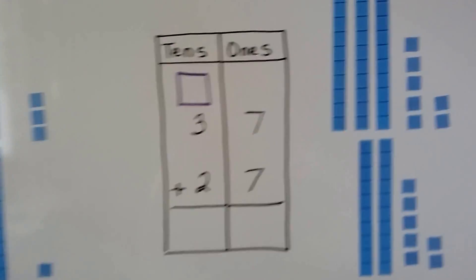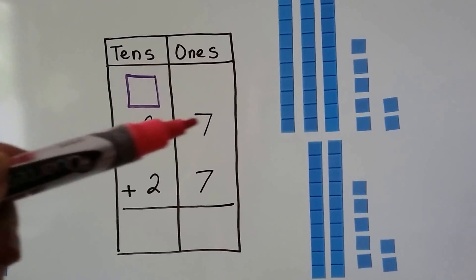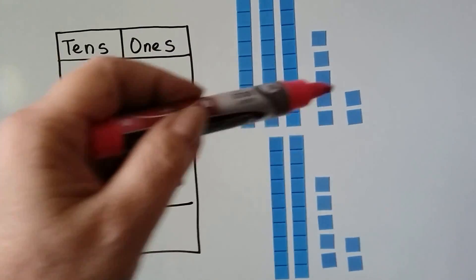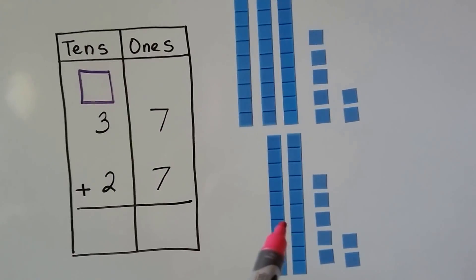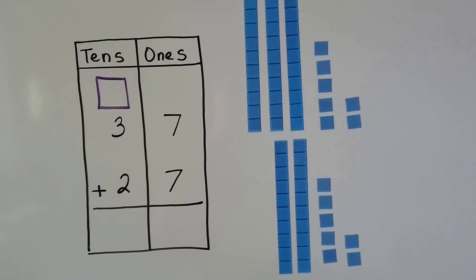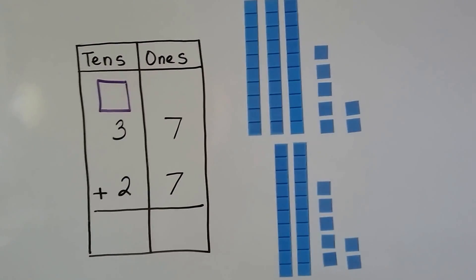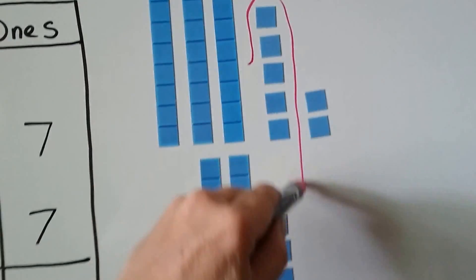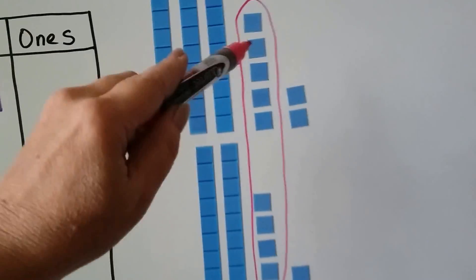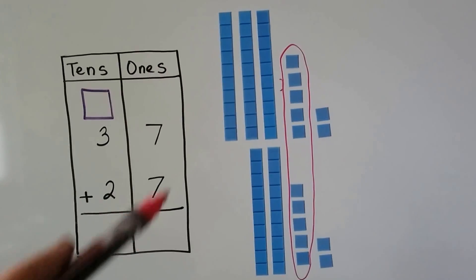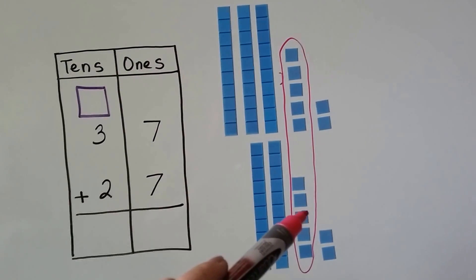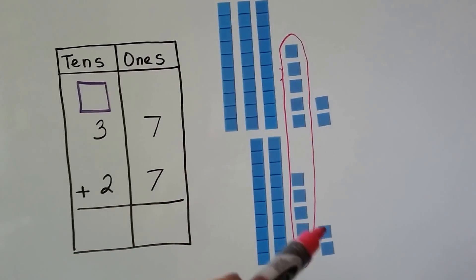Let's try it again. Here we have 37 plus 27. We have three tens and seven ones, and two tens and seven ones. Do we have enough ones to make a new ten? Yeah, we do — look right here. We can take this five and that five and make a ten. So now we have one, two, three, four, five, six tens and one, two, three, four ones.